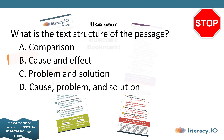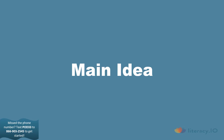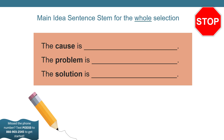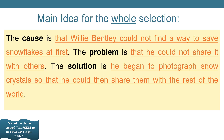A. Comparison. B. Cause and effect. C. Problem and solution. Or D. Cause, problem and solution. Welcome back, Detectives. It's time for us to write our main ideas. I hope you identified the text structure as being cause, problem, and solution. We'll use the sentence stems: the cause is, the problem is, the solution is. Pause your videos, discuss what you're going to write with your adult partner, and then text in your answer. Here's what I wrote for my main idea: the cause is that Willie Bentley could not find a way to save snowflakes at first. The problem is that he could not share it with others. The solution is he began to photograph snow crystals so that he could then share them with the rest of the world. How does your main idea compare to mine? I bet it's spot on.